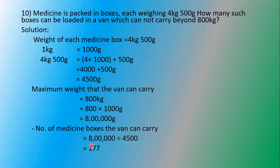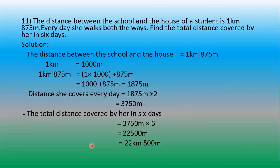So the maximum number of medicine boxes that the van can carry is 177 boxes. Next question: the distance between the school and the house of a student is 1 kilometer 875 meters. Every day she walks both ways. Find the total distance covered by her in 6 days.